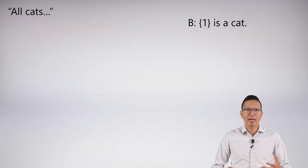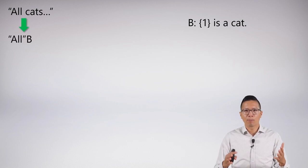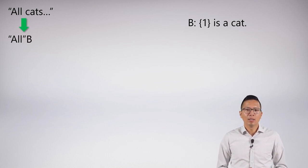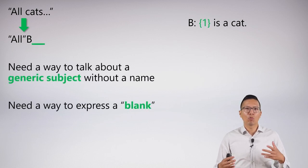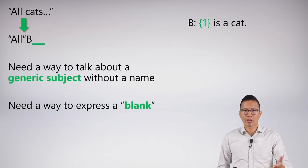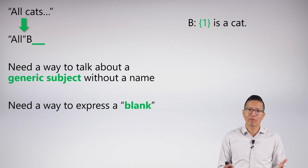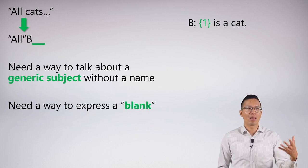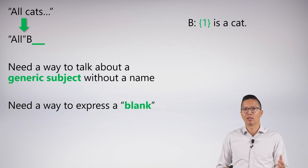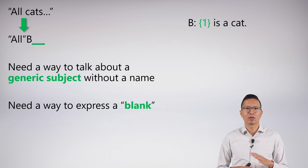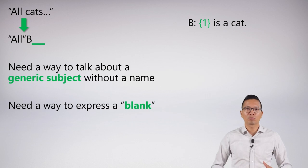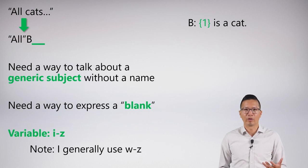How can I say all cats? Well, all cats, it's just all Bs, right? B is the predicate letter of cat. But what I really need is some way to talk about a generic thing, a generic subject that doesn't have a name. I don't want to have to name every single cat in the universe like Frisky and Mosley, et cetera. That would take forever, well, more than forever. So I need a way to express this blank as a generic subject. And so what we need is something called a variable.